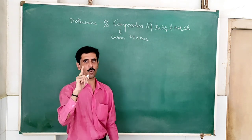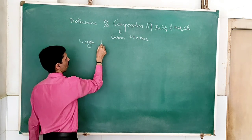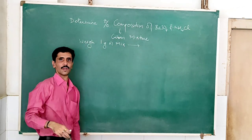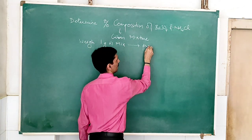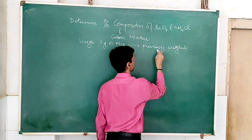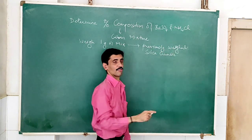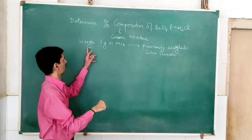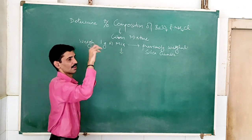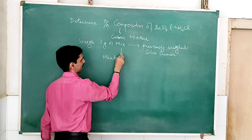To start with, step number one: we are going to weigh one gram of the mixture in a previously weighed silica crucible. We have to first weigh the silica crucible and into that we are going to take one gram of the mixture. And then we are going to heat it.